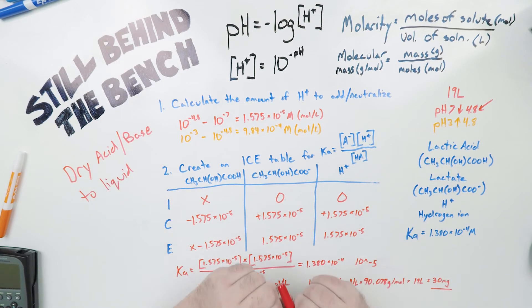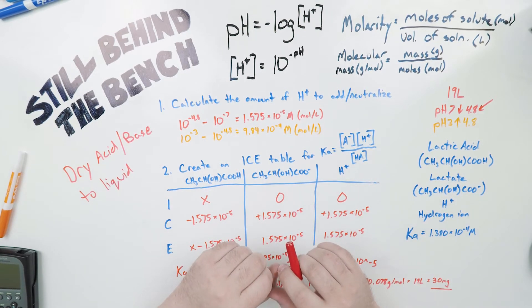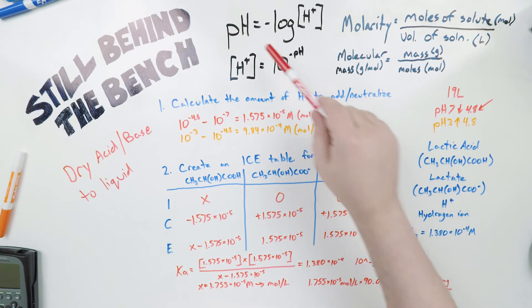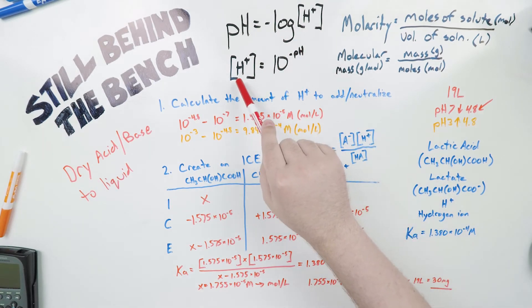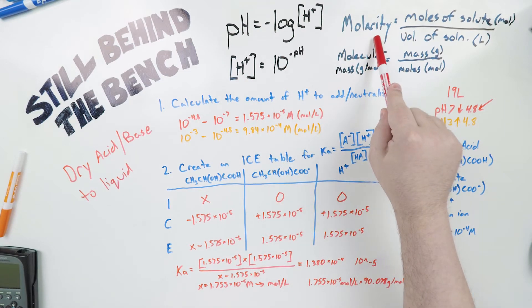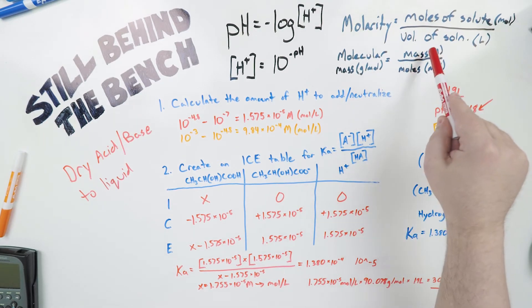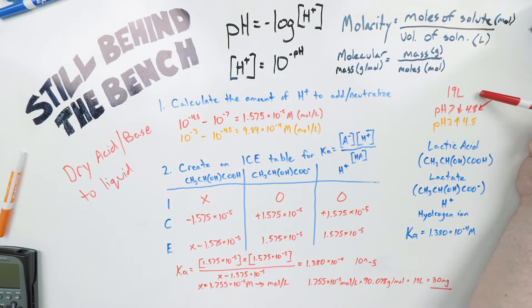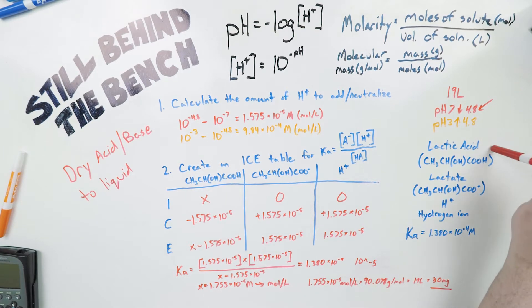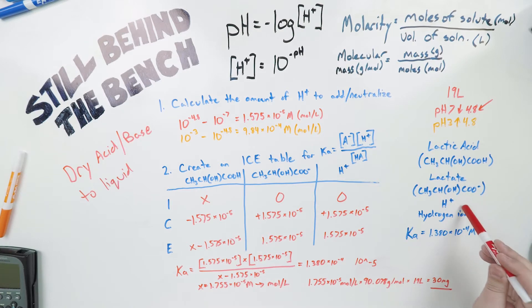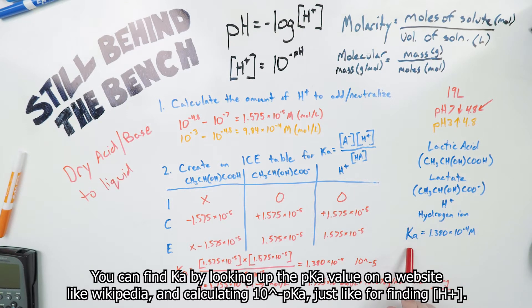Here we are at the bench. This may seem super complicated but it's not that bad once we get into it. You'll see I have the four equations from the last video: pH from hydrogen ion concentration, hydrogen ion concentration from pH, molarity from moles and volume, and molecular mass from mass and moles. Here are our two scenarios: 19 liters of solution, dropping the pH from 7 to 4.8. I'm using lactic acid in this example — its conjugate base will be lactate when it releases one hydrogen ion, and its acid dissociation constant Ka is 1.380 × 10⁻⁴.